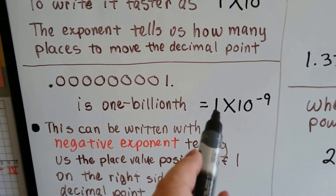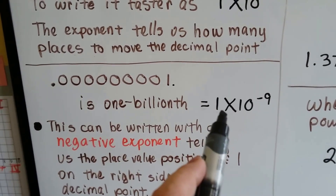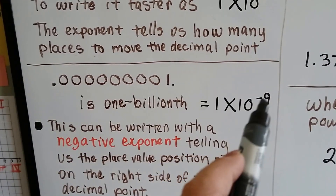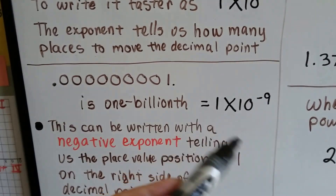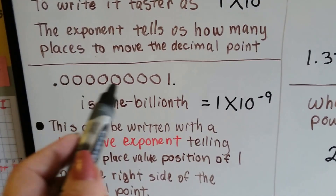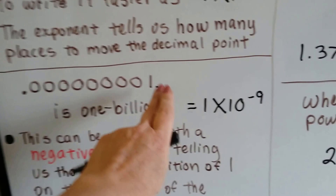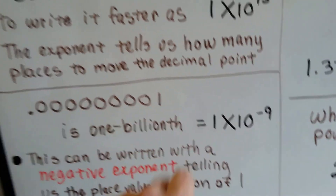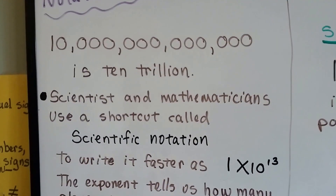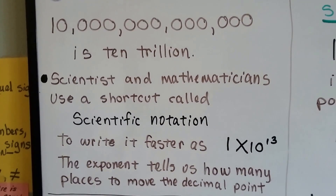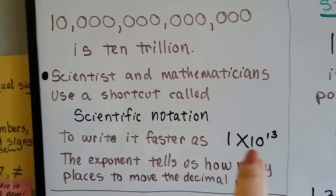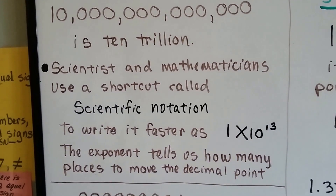It's a lot easier to write 1 times 10 to the negative ninth instead of writing that very long decimal. And you wouldn't want to write 10 trillion several times in a science or math paper — it would be a lot easier to just write 1 times 10 to the 13th power.